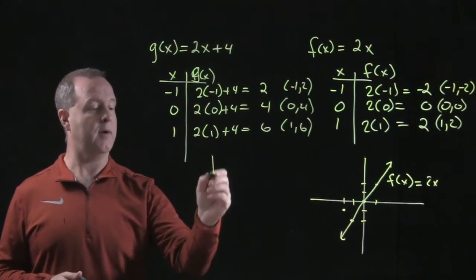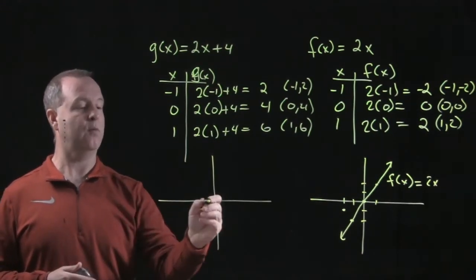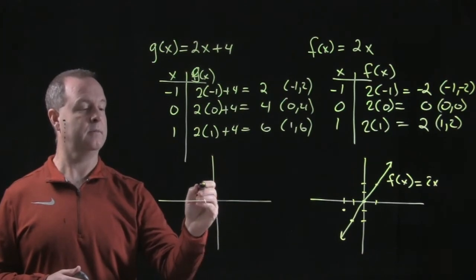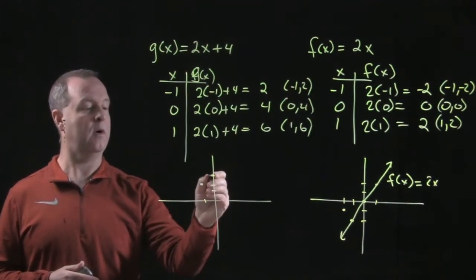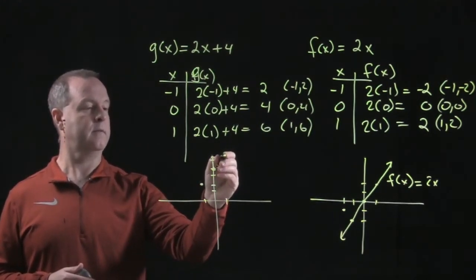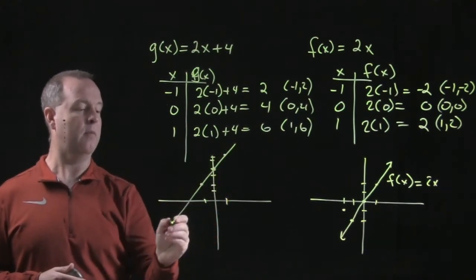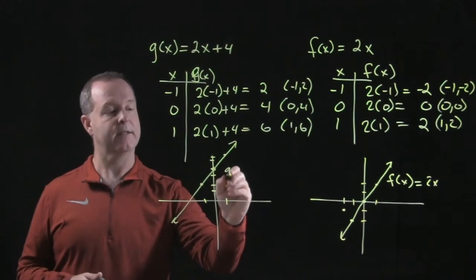The first one is at negative 1 and up 2. The second one is over at 0 and up 4. And the other one's over at 1 and up 6. They all match up on a straight line. And this one was my g(x).